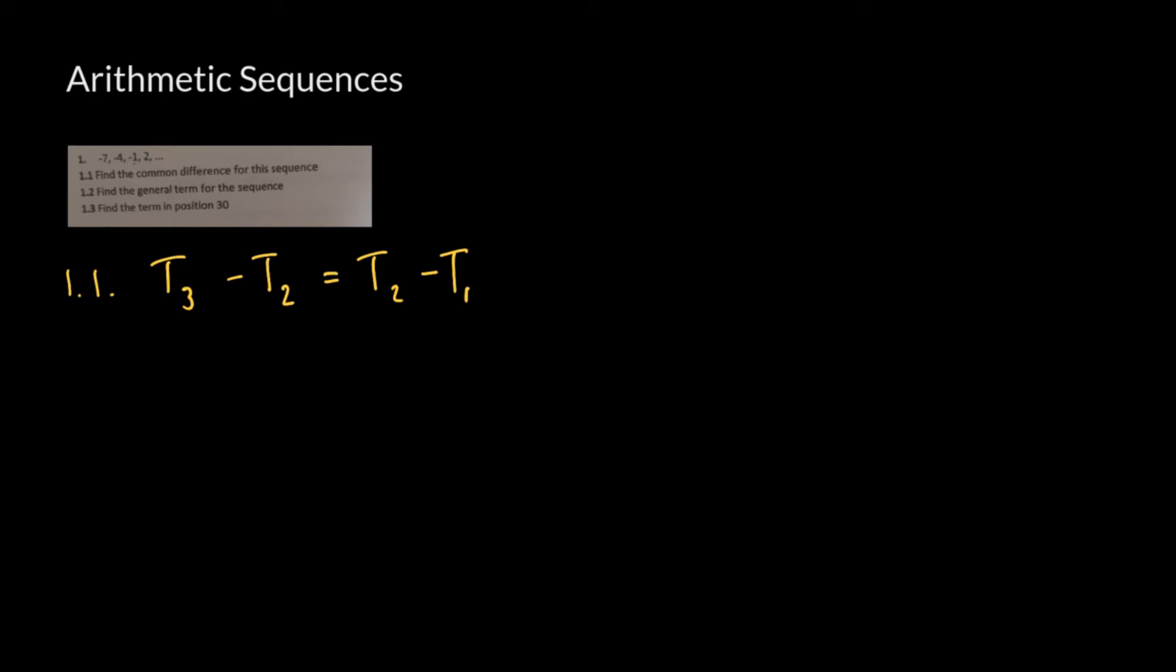Term 3 will be negative 7, negative 4, that will be negative 1. So negative 1 minus, and I'm going to open brackets here and put term 2 which is negative 4, must be exactly equal to negative 4, which is term 2, minus term 1, which is negative 7. So if we calculate that, we're going to get negative 1 minus negative, that's going to give us positive 4, so plus 4, which is equal to negative 4 minus negative 7, that's going to give us plus 7.